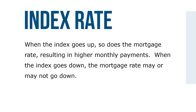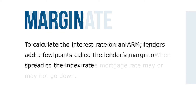When indexes go up, so does the mortgage rate, resulting in higher monthly payments. When the index goes down, the mortgage rate may or may not go down. To calculate the interest rate on an ARM, lenders add a few points called the lender's margin or spread to the index rate.